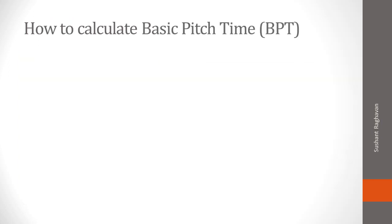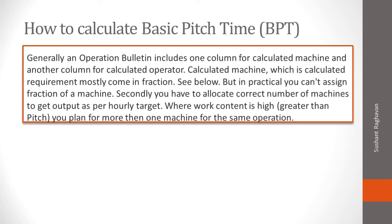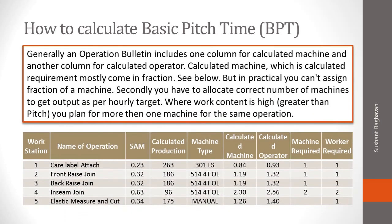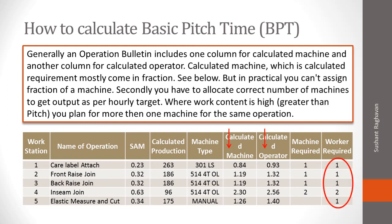Generally, an operation bulletin includes one column for calculated machines and another for calculated operators. The calculated machine requirement mostly comes in fractions. But in practice, you cannot assign a fraction of a machine. You have to allocate the correct number of machines to achieve output as per hourly target. Where work content is high — greater than the pitch — you plan for more than one machine for the same operation.